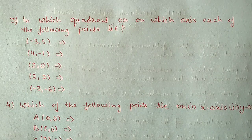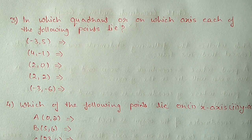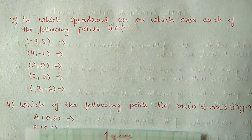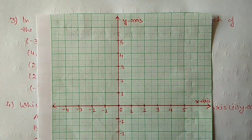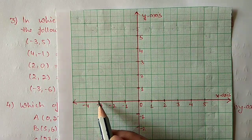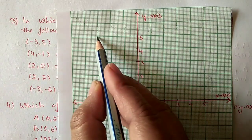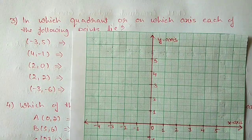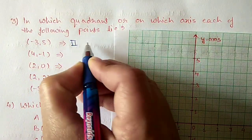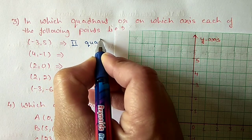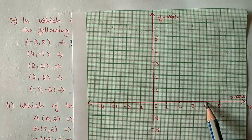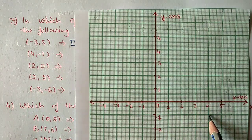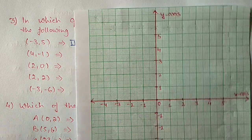Question number 3: in which quadrant or on which axis does each point lie? First point: (-3, 5). Plot -3 on x-axis and 5 on y-axis — this point lies in the second quadrant. Second point: (4, -1). Plot 4 on x-axis and -1 on y-axis — this point lies in the fourth quadrant.